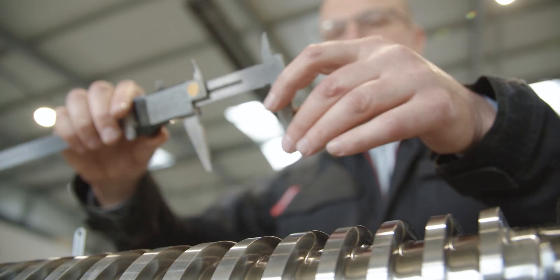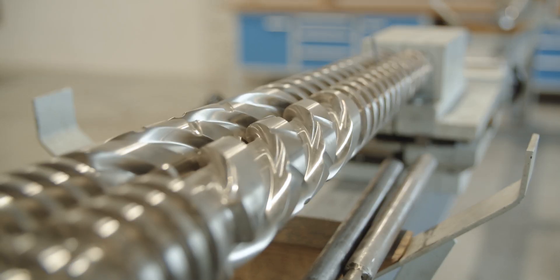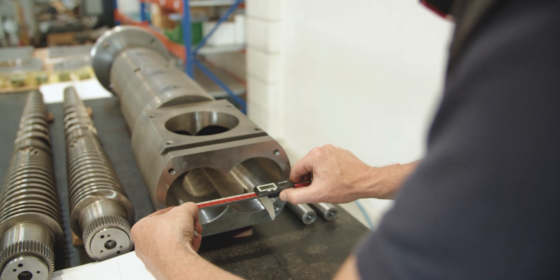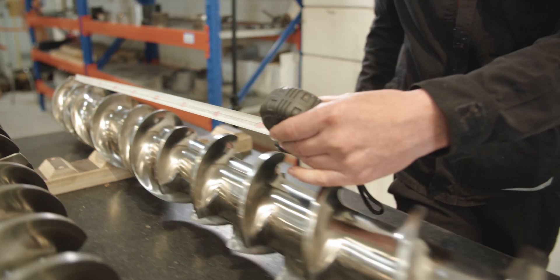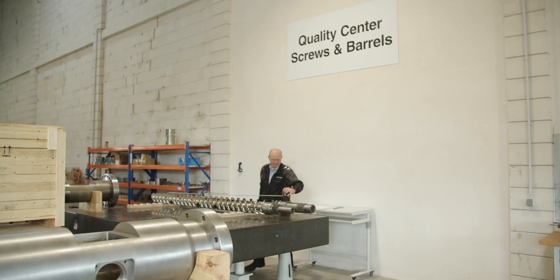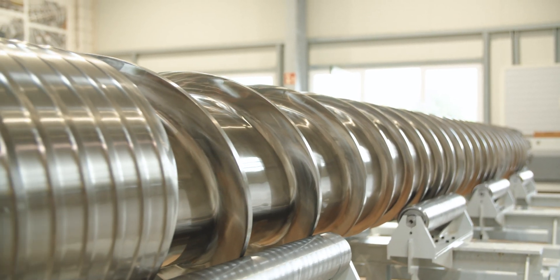We supply conical and parallel counter-rotating twin screws for all brands. Screws for rubber production are as much a part of German twin screws as large single screws with an output of high-quality granulates of up to 40 tons per hour. Our markets are the oil, food and plastics industries.